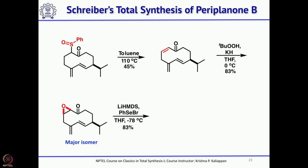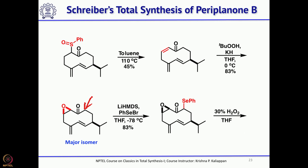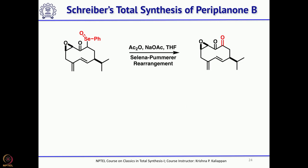Now he introduced the double bond on the other side using lithium hexamethyldisilazide followed by quenching with phenylselenyl bromide. Instead of introducing a double bond here, he needed to introduce a hydroxyl group. So he used a seleno-Pummerer rearrangement. For that, he first introduced a phenylseleno group by treating with lithium hexamethyldisilazide and phenylselenyl bromide, then oxidized the phenylselenide with hydrogen peroxide to form the phenylselenoxide, then treated with acetic anhydride.